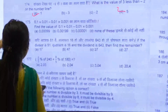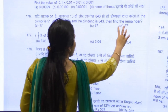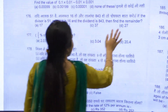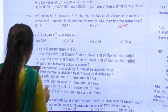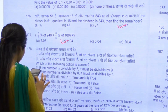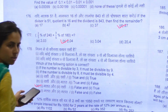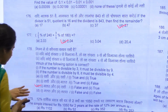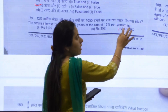176 is D. Option C is the answer for question number 178. For 179, we have D as our answer.